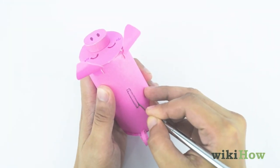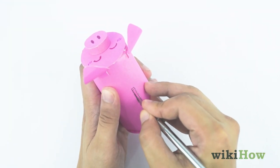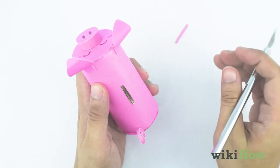Finally, use a box cutter to cut a hole in the top of your piggy bank that's just large enough for coins to fit through.